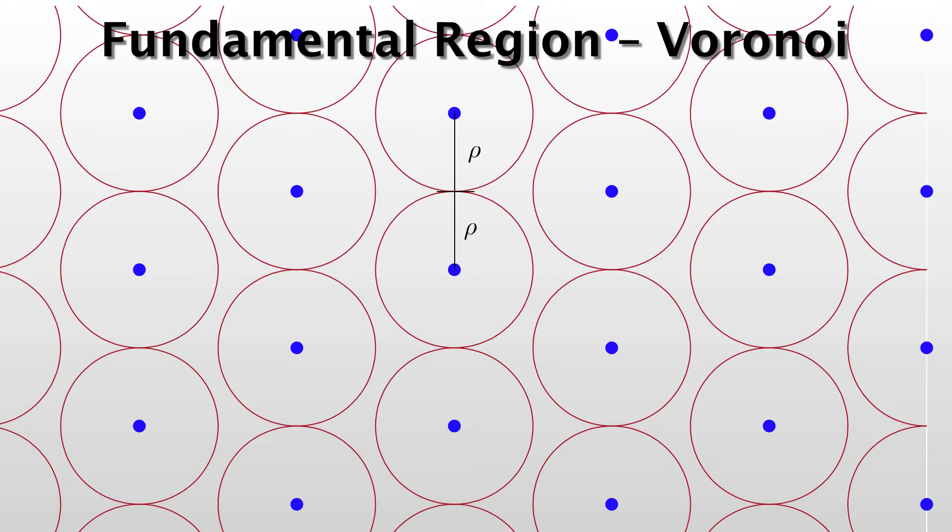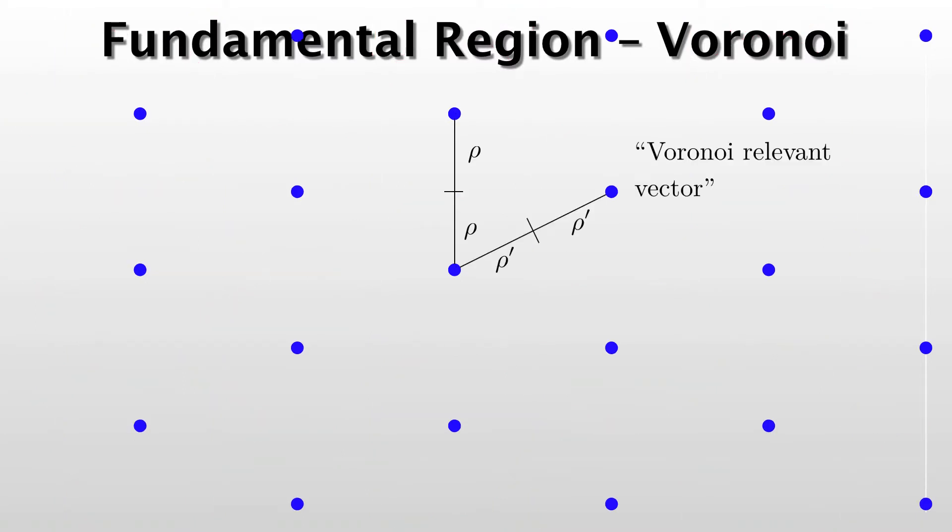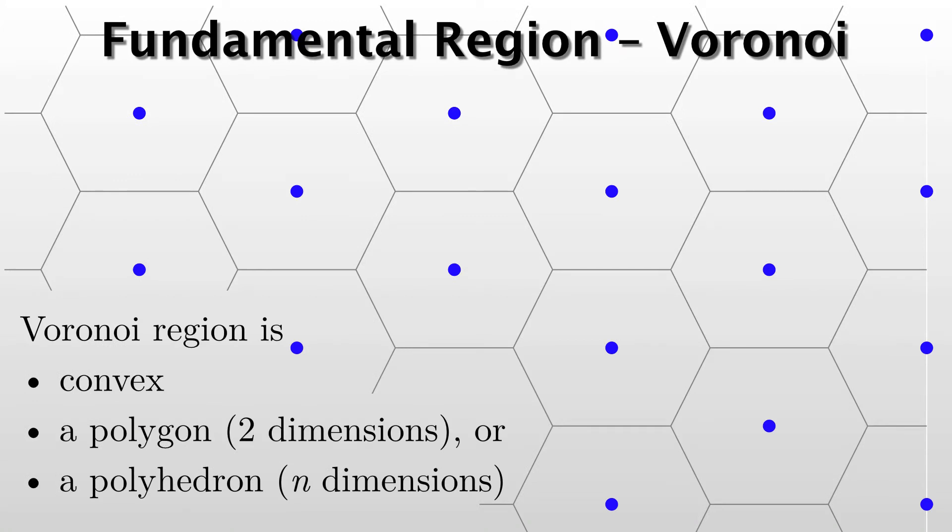There's another point which is not closest, but it is important for defining the Voronoi region. So there's another vector. Draw a line to it and split it in half. That distance might be rho prime. And we call that the Voronoi relevant vector. So you do that for all of the neighbors and you get the Voronoi region.